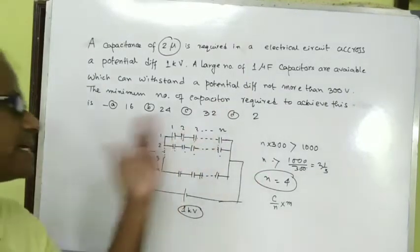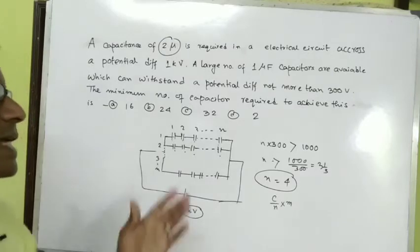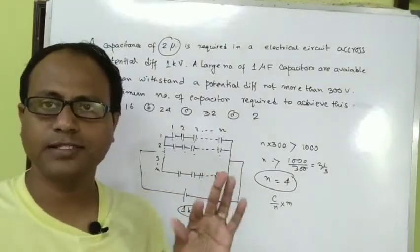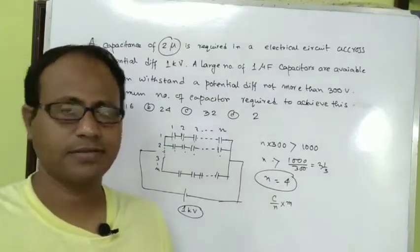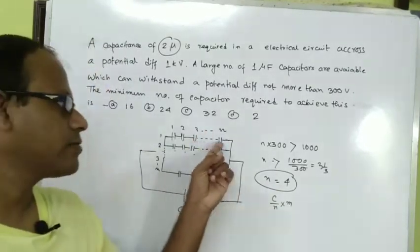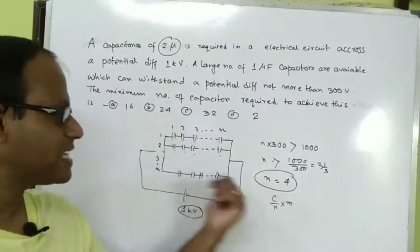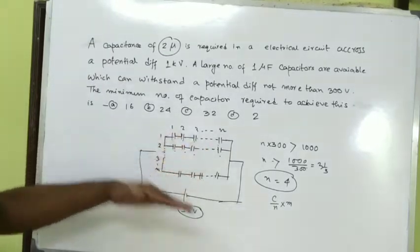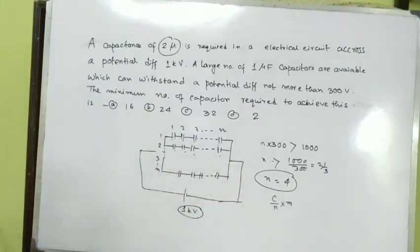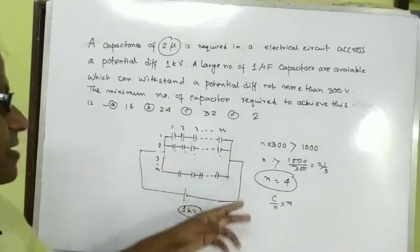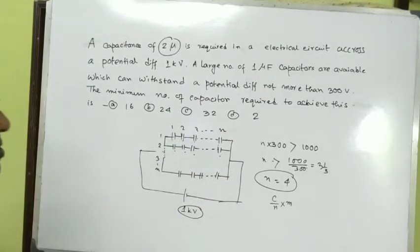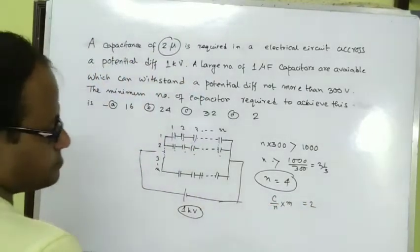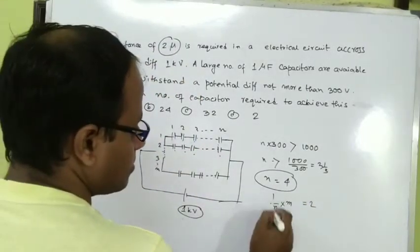The total capacitance for each branch is C by n. Now we need m branches in parallel. For parallel combination, the capacitances add: C by n plus C by n equals m times C by n total.